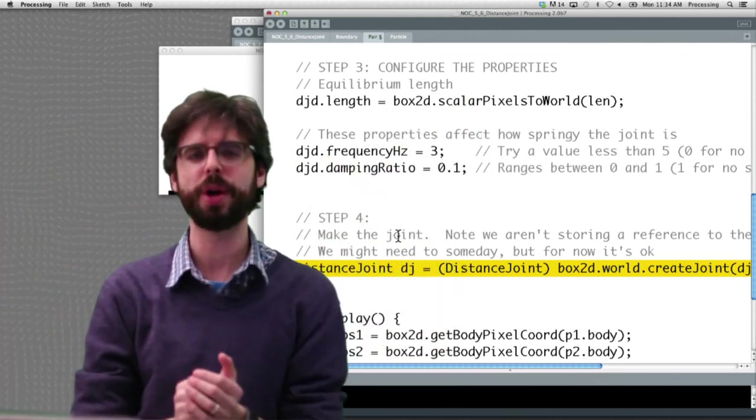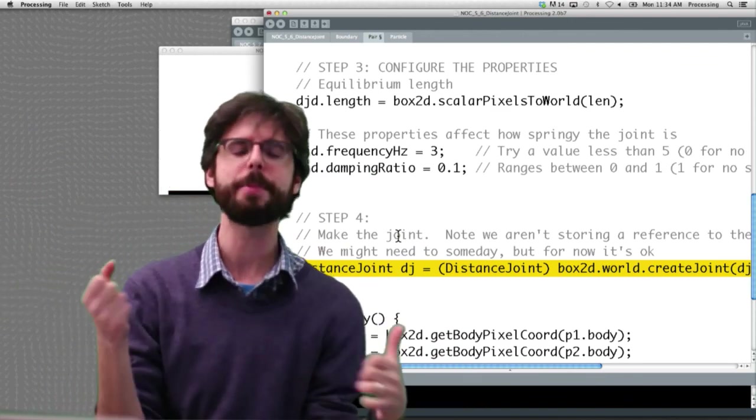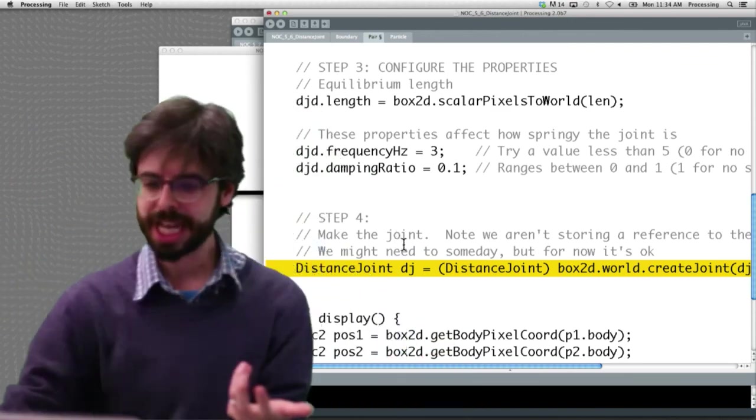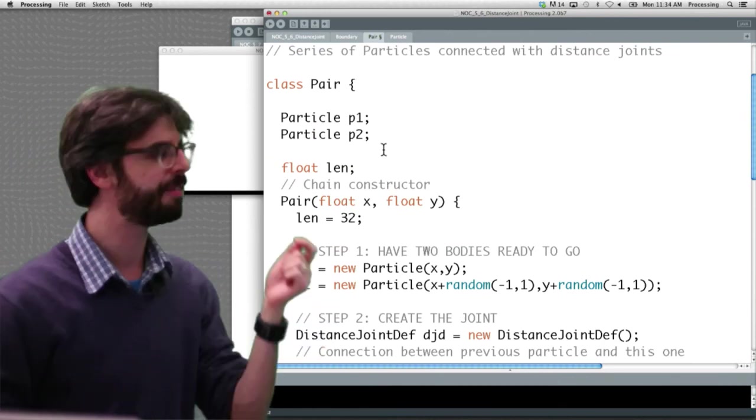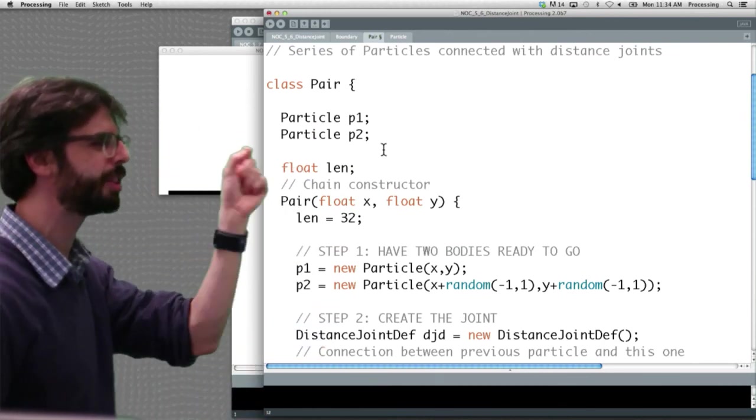We don't need to affect that joint, delete it, change its properties later. However, if you did, we would probably see here as a variable, we would probably want to keep a reference to that joint variable.